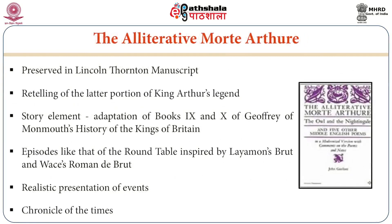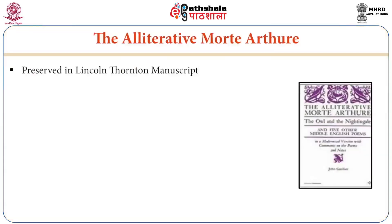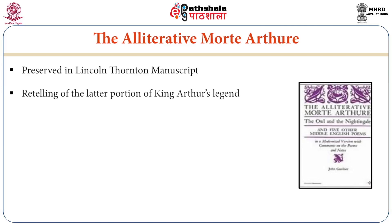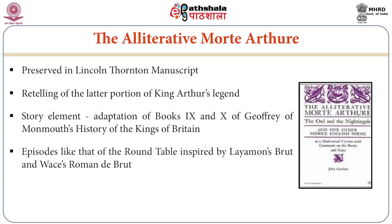The Alliterative Morte Arthure is another important category of Middle English alliterative poetry, preserved in the Lincoln Thornton Manuscript. It is a retelling of the later portion of King Arthur's reign, adapted from Books Nine and Ten of Geoffrey of Monmouth's History of Kings of Britain. There are episodes inspired by Layamon's Brute and Wace's Roman de Brut. It is a realistic representation of events and the chronicles of the time.